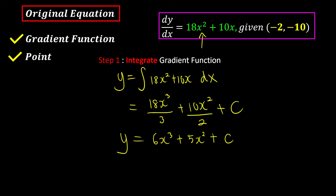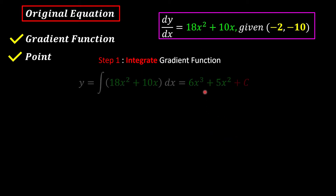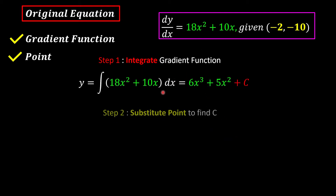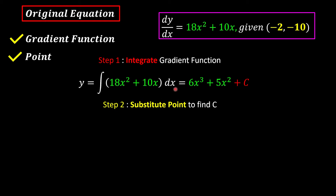But this is an incomplete equation of the curve because we still have c. So we need to substitute one of the given points, which is negative 2, negative 10. Substituting: negative 10 equals 6 times negative 2 cubed plus 5 times negative 2 squared plus c.